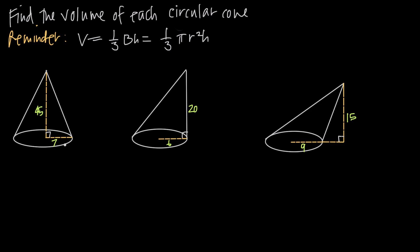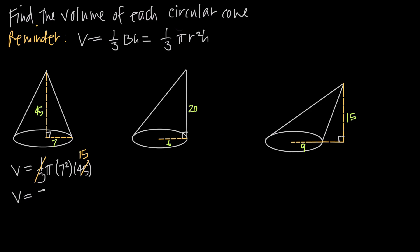We've got a couple of examples here. This first cone, we can see that the radius is 7 and the height is 45. So if we plug those values into the volume formula, volume is equal to one-third times π times r squared. We know r is 7, so we get 7 squared times the height, which is 45. When we simplify, one-third times 45 gives us 15, and then 15 times 7 squared — or 15 times 49 — which is 735. So we can call volume 735π.